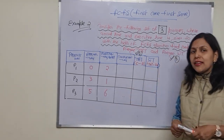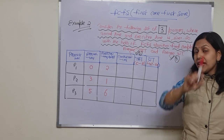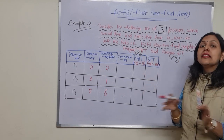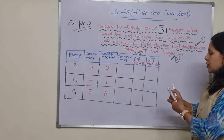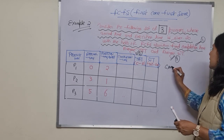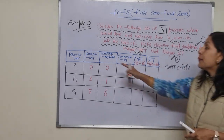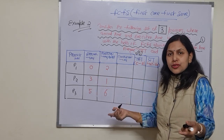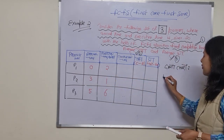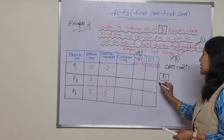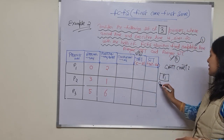To find the completion time, we first need to draw the Gantt chart, as I explained in the previous video. Without making the Gantt chart we can't write the completion time. Process P1 arrives at time 0 and takes 2 units of execution time, so it runs from 0 to 2 on the Gantt chart.